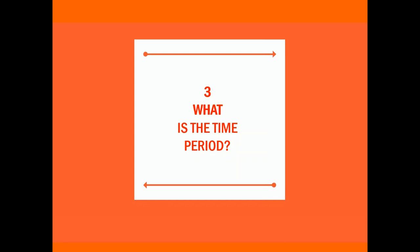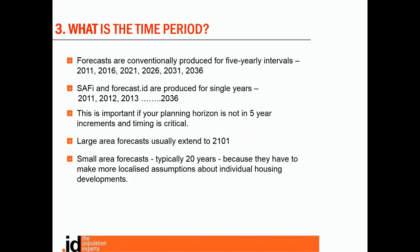Once you know whether the forecast is going to meet your geographic needs, next it's important to know if the time period covered by the forecasts will tie in with your planning horizon. Forecasts are conventionally produced for five year intervals. SAFI and forecast ID are produced for single years, which is important if your investments are time critical. If you are planning to build a retail outlet in a growth area, the difference in population between three years and five years can be substantial, and a forecast with a five year time horizon may not be accurate enough for your needs. Some people try to cut five year forecasts into single years by assuming consistent growth each year - this is definitely not a good idea as it doesn't match the reality of population growth, which can fluctuate enormously each year depending on where and when dwellings are built to house the population.